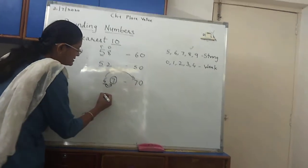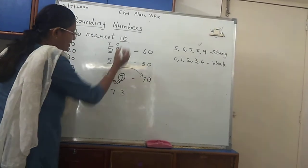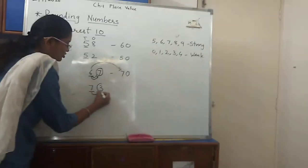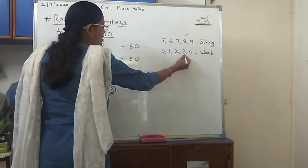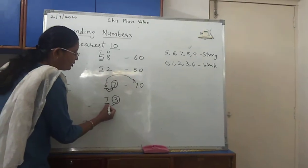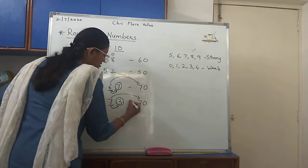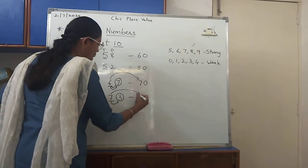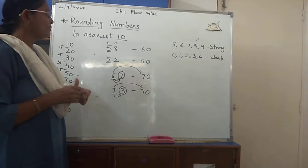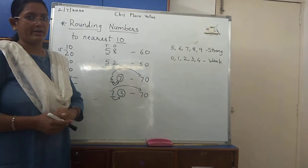Same way, another example. If I give you 73, again we are talking about 10s place. So 10s place 7 is given. Go to the next place to see whether the number is strong or weak. 3 is a weak number. So it does not have power to push 7. 7 will remain as it is over here, and instead of this you will write 0. So 73 is rounded up to 70. Is that clear? This is the way how you can round numbers. Same thing you have to do for 10s. In my next video, I will explain you about rounding to the nearest 100. Thank you.